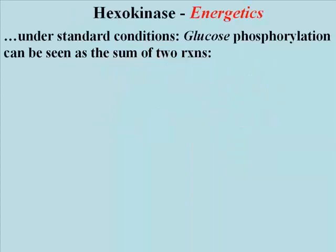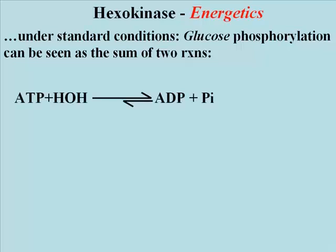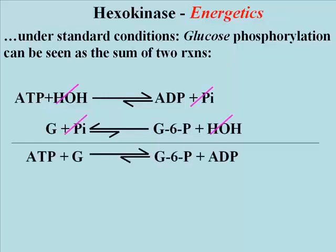Let's look at the energetics of the hexokinase-catalyzed reaction. The easiest way to do this is to think of the reaction as the sum of two reactions. The first is the hydrolysis of ATP. The second is the phosphorylation of glucose, a condensation reaction. We can sum the two reactions by cancelling the terms found in common on both sides of the chemical equations, and then adding the remaining reactants and products as seen in the summed equation here.